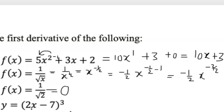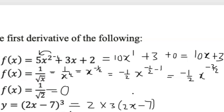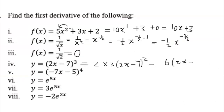Using the chain rule on (2x minus 7) cubed: differentiate the inside — 2x minus 7 gives 2. Then differentiate the outside: carry the 3 in front, rewrite 2x minus 7, and subtract 1 from the power so 3 minus 1 is 2. Multiply 2 times 3 to get 6. So the derivative is 6 times (2x minus 7) squared.